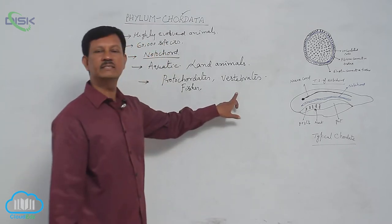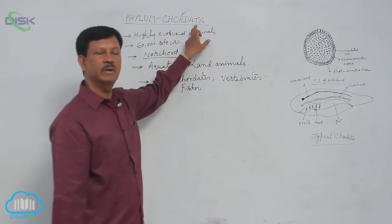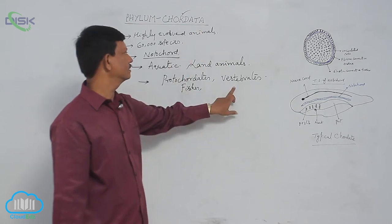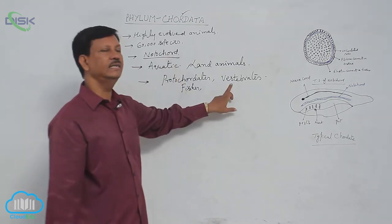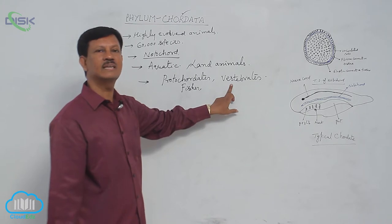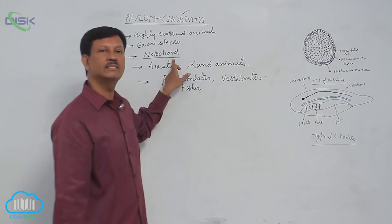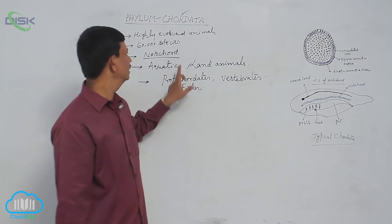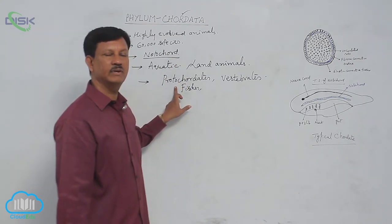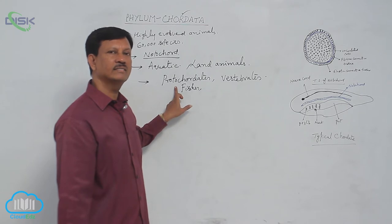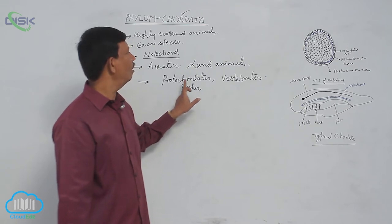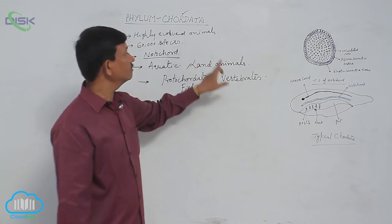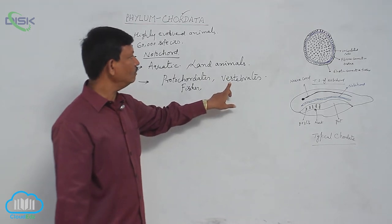All vertebrates are chordates, but all chordates are not vertebrates. In vertebrata, notochord is replaced by vertebral column, but in some animals notochord is not replaced. It is present throughout their life in some animals, for example protochordates. That is why all vertebrates are chordates, but all chordates are not vertebrates.